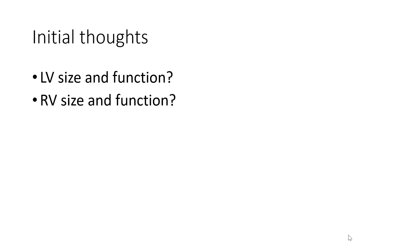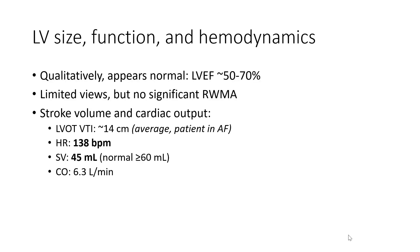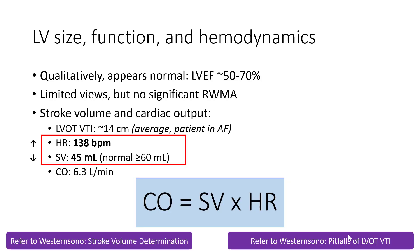Qualitatively, the left ventricle appeared relatively normal with an ejection fraction perhaps around 50 to 70%. Based on our limited views, we could not identify any significant regional wall motion abnormalities. We used the LVOT VTI — or velocity time integral — to determine stroke volume, averaged in our patient who had atrial fibrillation. Based on a stroke volume calculated around 45 mL, using the formula cardiac output equals stroke volume times heart rate, the cardiac output was roughly 6.3 liters per minute, a relatively normal range. Listeners can refer to the Western Sono stroke volume determination and pitfalls of LVOT VTI screencasts for more details.